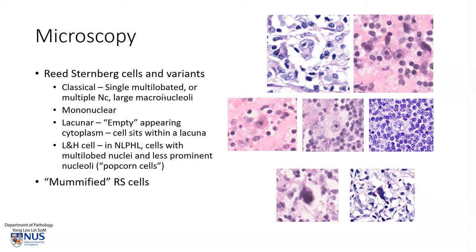Microscopically, Hodgkin lymphoma is recognized by the presence of Reed-Sternberg cells, which have a few variant appearances. The classical Reed-Sternberg cell is usually a cell with a single multi-lobated nucleus or several nuclei, most often two nuclei, which are very large and contain macronucleoli or extremely prominent nucleoli. Here is a binucleated Reed-Sternberg cell, and here is another binucleated Reed-Sternberg cell with very large nuclei and macronucleoli which are so large that they approximate the size of a small lymphocyte.